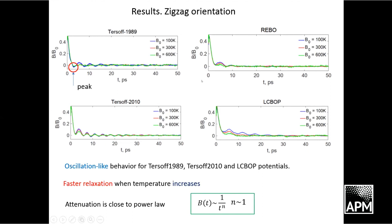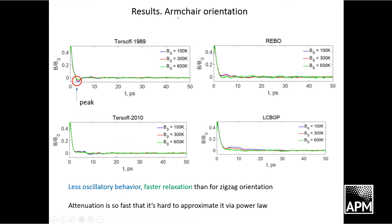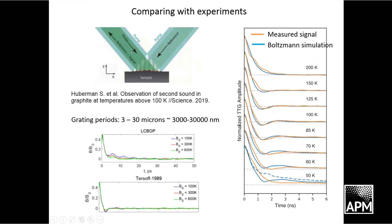Next I'll show the results of armchair orientation. We see that no oscillations can be seen here. Also, the relaxation goes almost immediately, much faster than for zigzag orientation, suggesting that temperature relaxation occurs much faster than for zigzag. We can no longer approximate it via power law, and we can see this peak for Tersoff's potential.